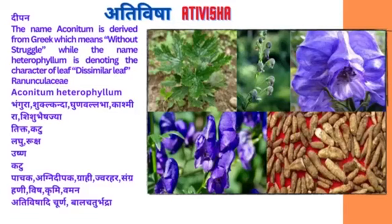Botanical name: Aconitum heterophyllum. Synonyms include Bhangura, Shuklakanda, Ghunvaldha, Kashmira, and Shishubhashajah.